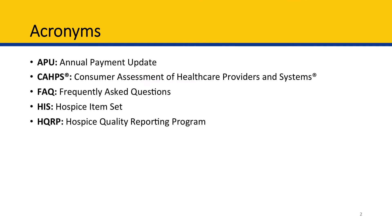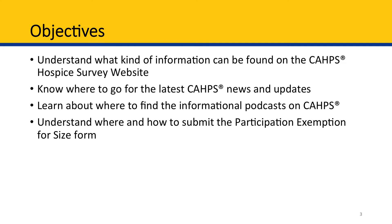Included on slide two is a list of acronyms used in this module, appearing in alphabetical order. The external CAHPS Hospice Survey Website is one of three websites available to hospice providers to help them stay up to date on HQRP requirements. This module will focus exclusively on the external CAHPS Hospice Survey Website. Specific learning objectives are listed on slide three.